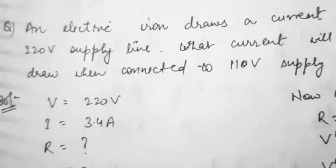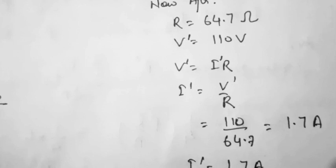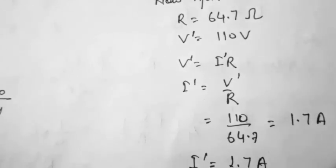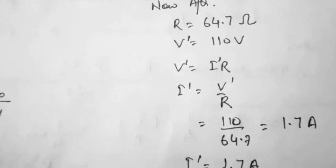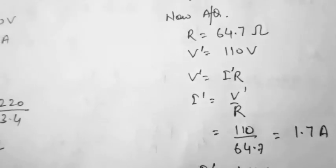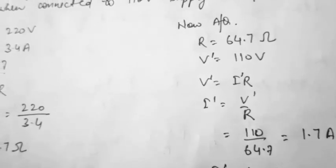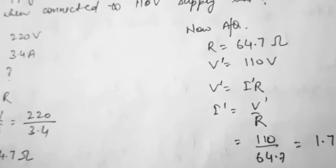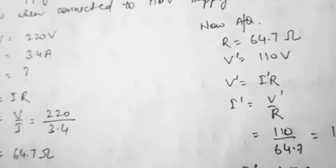For the second condition with a 110 volt supply, resistance remains the same at 64.7 ohm and the new voltage V' = 110 volt. Using V' = I'R, we get I' = V'/R = 110/64.7 = 1.7 ampere. So you can see: when voltage is halved and resistance is unchanged, the current is also halved. Conversely, when voltage is doubled, current is doubled.